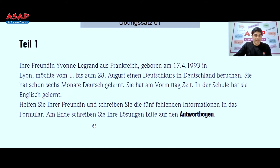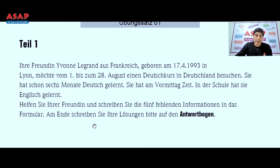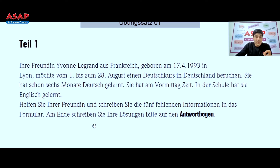Before we go to the form, we should read the text. The text says: your friend Werner Legrand from France, born on the 24th of April 1993 in Lyon, wants to attend a German language course in Germany from the 1st to the 28th of August. She has already studied German for six months.